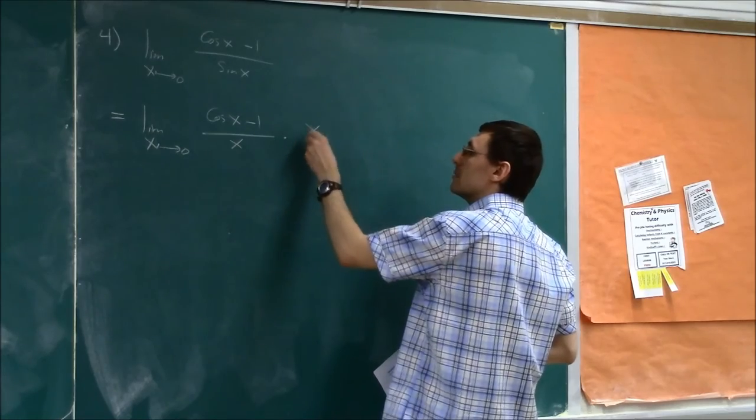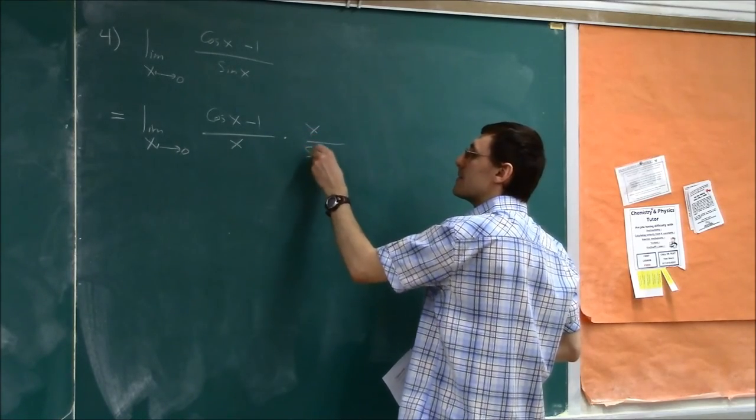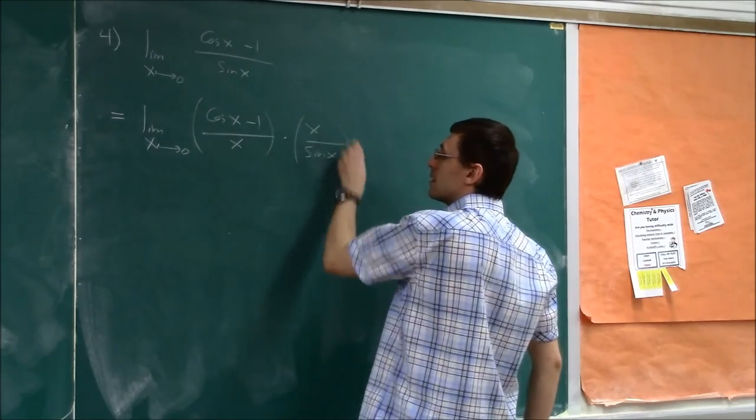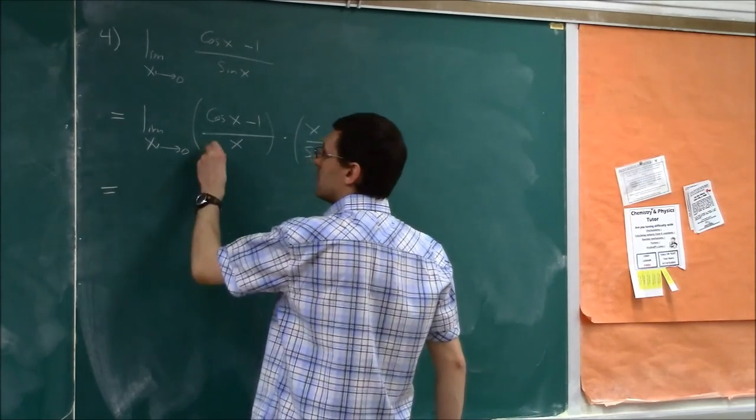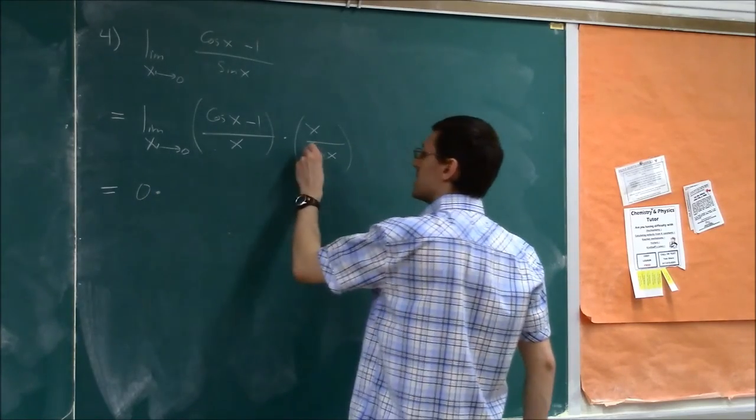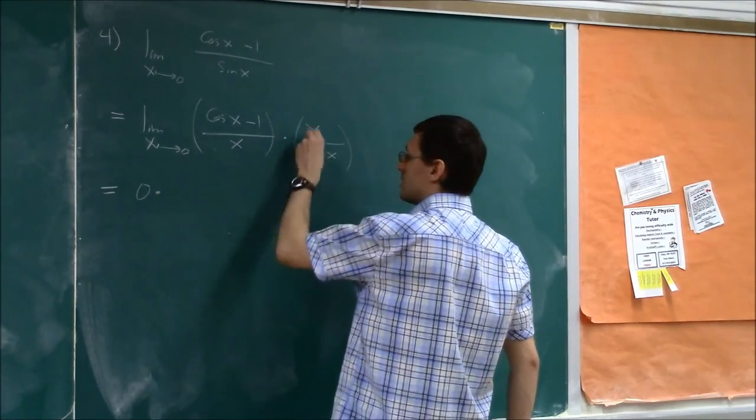Now, we have x over sin(x) to cancel out. Now, this limit we know is 0 times this limit, which is just 1.